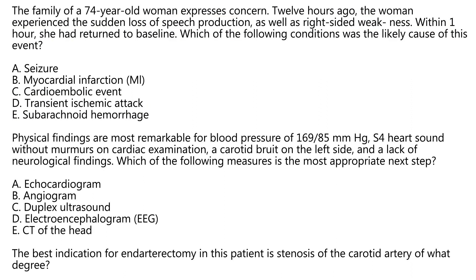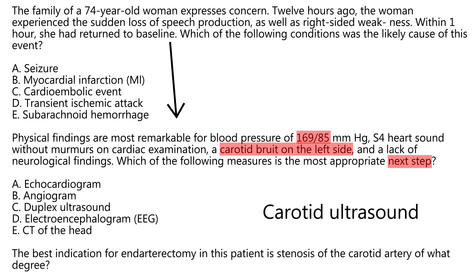This is a continuation of that question. Physical findings are most remarkable for blood pressure of 169 over 85, an S4 heart sound without murmurs, a carotid bruit on the left side, and lack of neurologic findings. The most appropriate next step: since the carotid arteries have already been auscultated, you can now proceed with a carotid ultrasound.